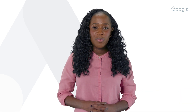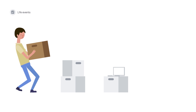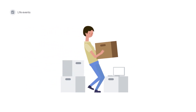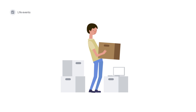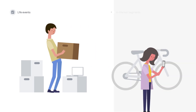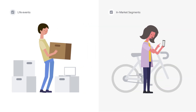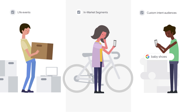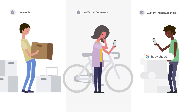Intent audiences leverage intent signals from Google Search and across the web. They include life events — for viewers going through important life milestones like graduating from college or moving homes — in-market segments for viewers actively considering buying a certain product or service, and custom intent audiences for viewers who search for your product or service on Google.com.